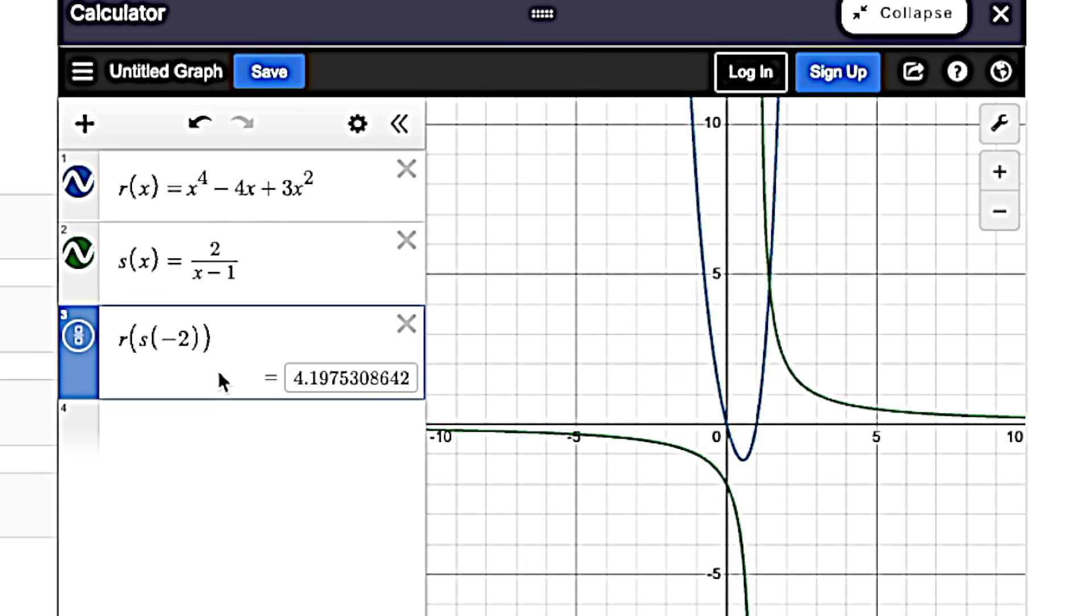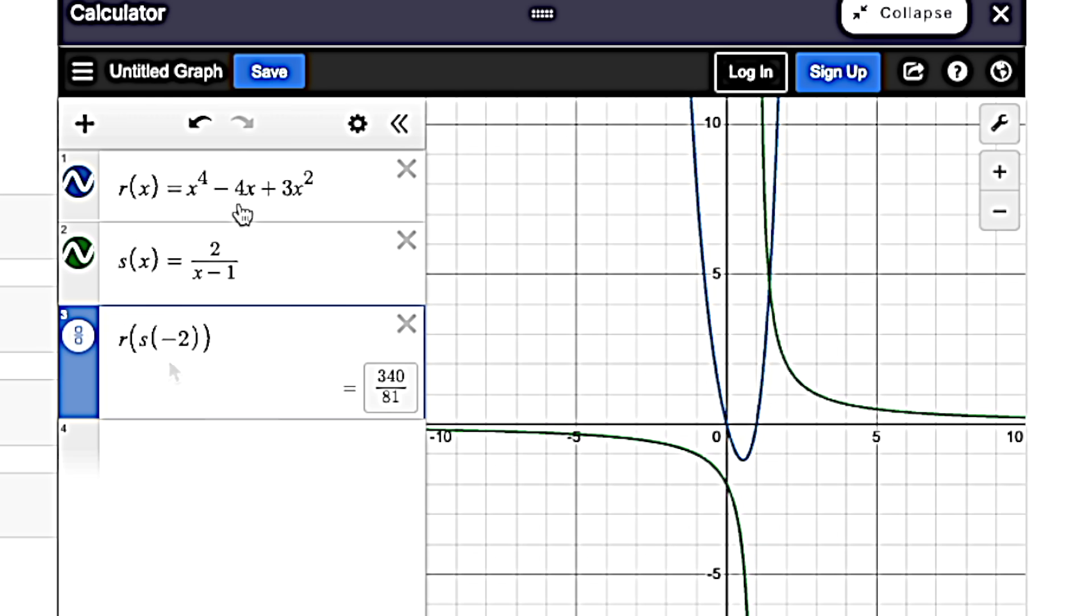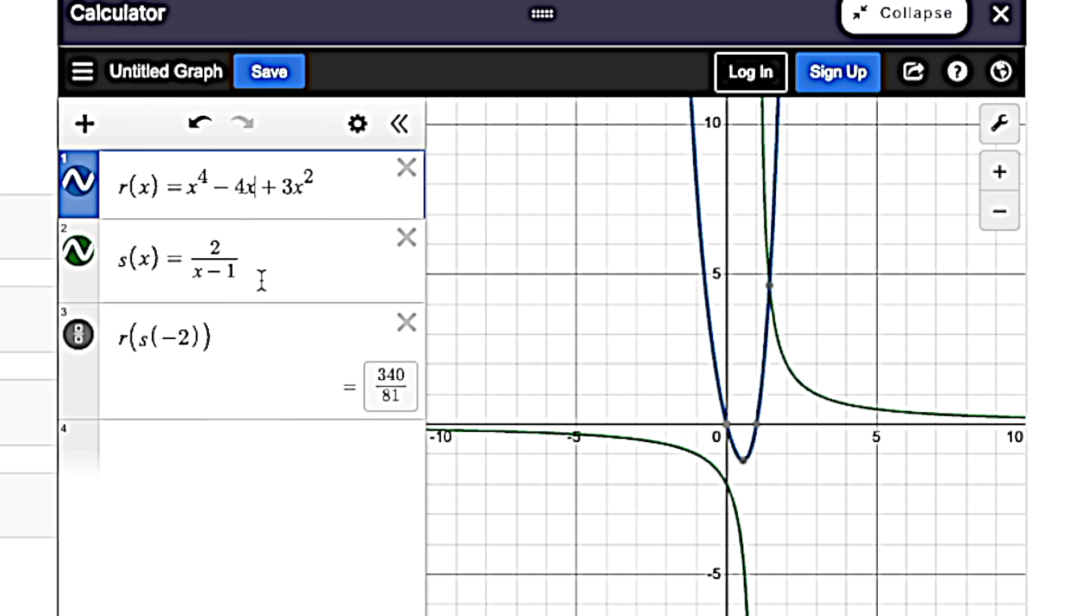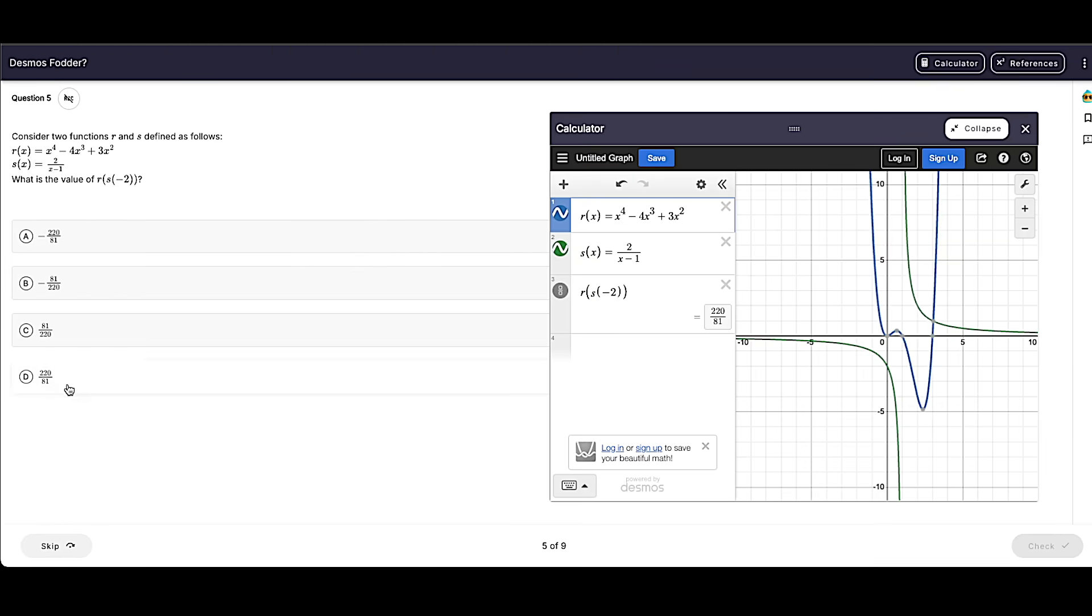And a little bonus tip here. We don't like this decimal. We have a bunch of fractions as answers. This little button right here converts into a simplified fraction. So we know our answer after I fix this is going to be 220 over 81. Choice D here.